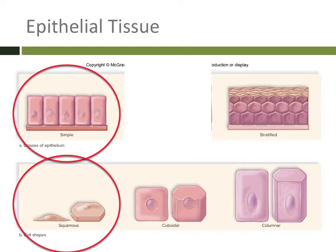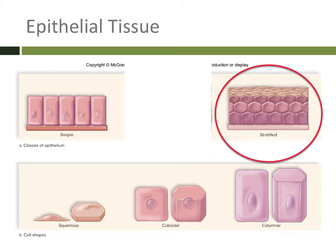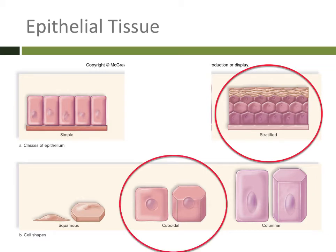Simple squamous epithelial tissue is going to have a function similar to its structure. If you have a very thin, flat tissue that's only one cell layer thick, it's probably not going to be very good at protecting. However, because it is so thin, it could be excellent at diffusion. You could also have multiple layers — stratified — and if the cells are a cuboidal or square shape, you could have stratified cuboidal epithelium. This isn't going to be as easy to diffuse through because you've got more than one thick layer of cells. So you wouldn't find stratified cuboidal cells in areas of diffusion; you would find them in areas of absorption or secretion.